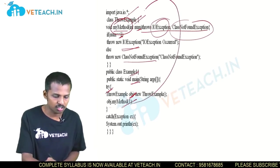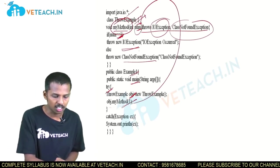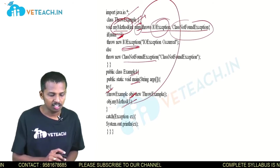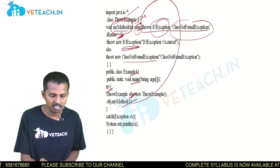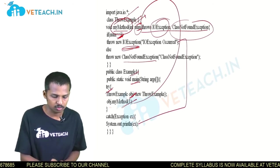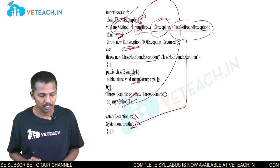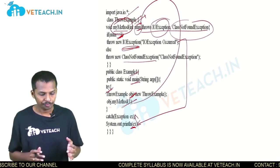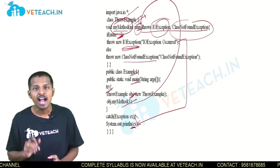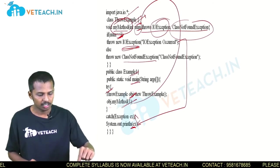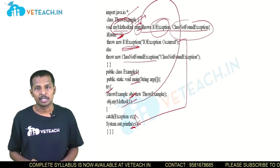Example1 contains the main method. Inside this we write a try-block and create an object for the ThrowExample class, then call obj.myMethod(1). Control transfers to the method where number becomes 1, and we throw a new IOException. Since IOException is raised, control transfers to the catch-block and 'ex' gets printed, which outputs 'java.io.IOException: IO exception has occurred'. If any number other than 1 is passed, ClassNotFoundException gets printed.